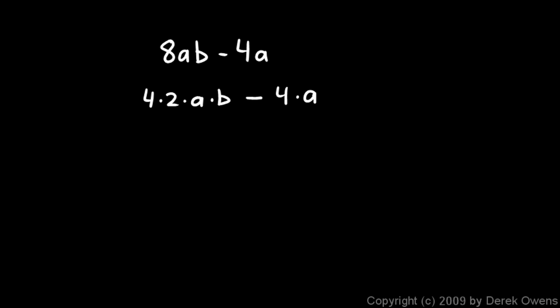And you can see that this term and that term both have a 4a. So I can factor out the 4a. And if I get a 4a out of this first term, I'm left with the 2 and the b. So I have a 2b there, and then I have my minus sign. And if I take my 4a away from there, I'm just left with 1. So 4a times 2b minus 1. These are the two factors.